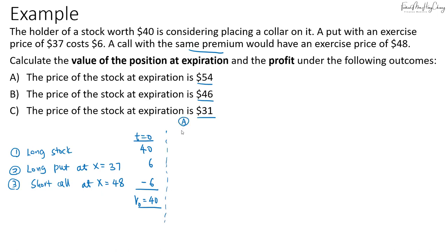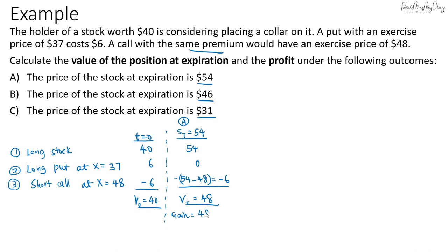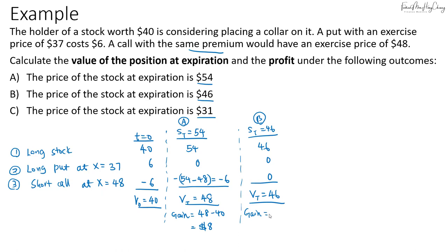In Scenario A, if the stock price at expiration is $54, the stock goes from $40 to $54. The put option cannot be exercised since the price is above its exercise price, but the short call is exercised, giving a payoff of $54 minus $48, which is a negative $6 liability. The value of the zero-cost collar is $48, and the gain is $48 minus $40, which is $8. In Scenario B, if the spot price is $46, neither the long put nor the short call can be exercised, so the value is $46 and the gain is $46 minus $40, a gain of $6.